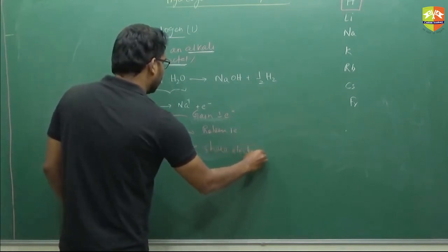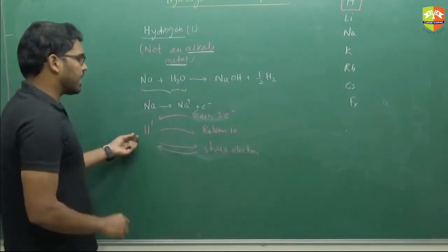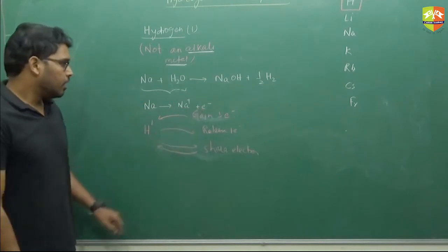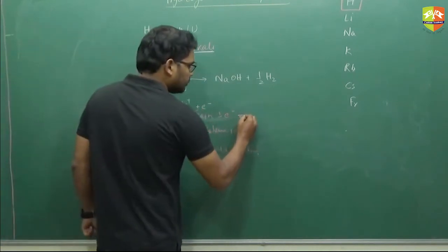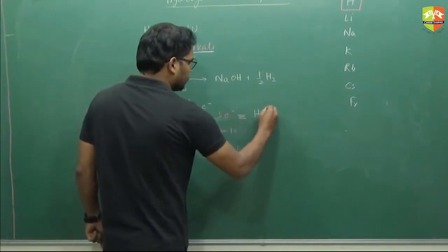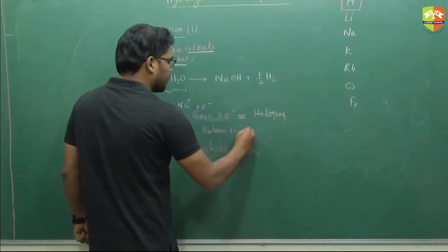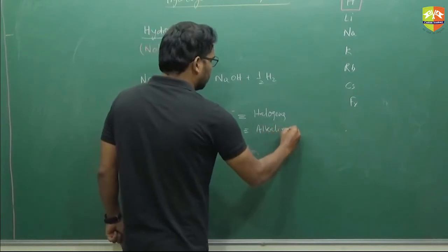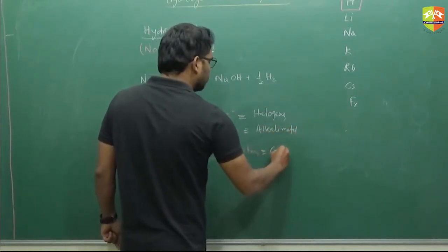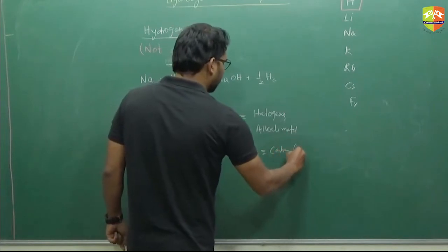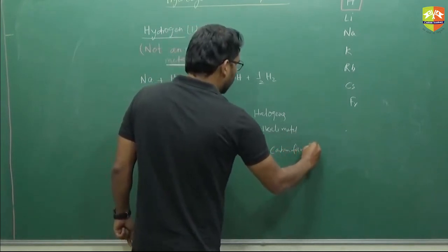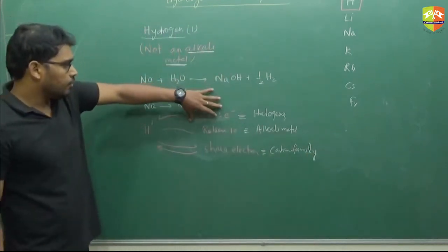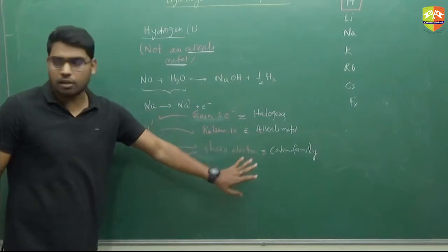So if you see these three properties: alkali metals have tendency to release one electron — sodium releases one electron. This property is similar to halogens. The tendency to gain electron is similar to alkali metals. And the sharing property is similar to carbon family. So the position of hydrogen can be with halogens, with alkali metals, or with the carbon family.